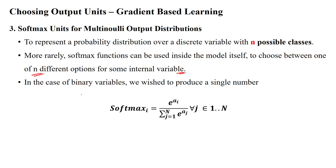For binary variables, a single number is produced, while for multi-class classification, softmax produces maximum likelihood values. The softmax formula is: softmax(a_i) = e^(a_i) / Σ(j=1 to n) e^(a_j), where n is the number of classes.